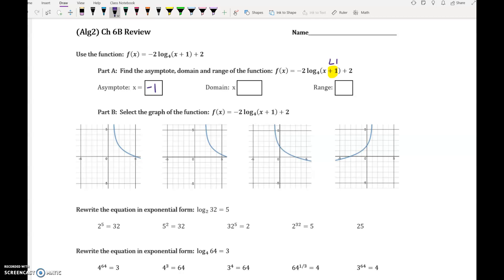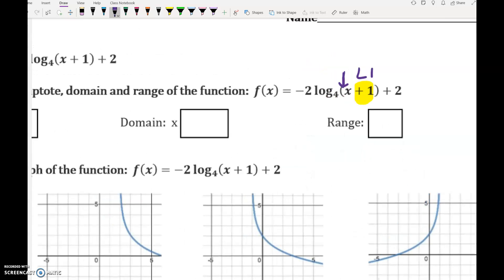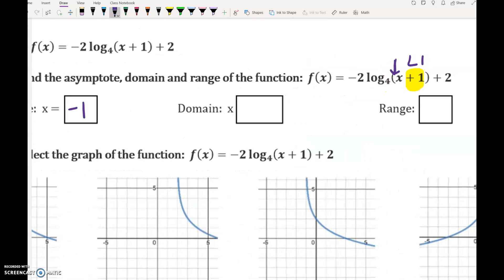The domain, the only time that the domain symbol switches is if there's a negative in front of the x inside the parentheses. So because this set of parentheses does not have a negative in front of that x, the domain is x is greater than whatever your asymptote value is.